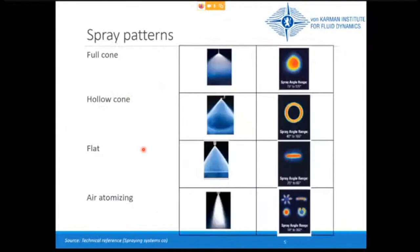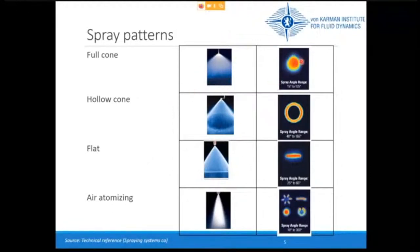Depending on the geometry of the nozzle, you can create different spray patterns. One mostly applied for water curtains is the full cone — from the side it looks like a cone, and from the bottom the water fills the whole cone. You can also have a hollow cone, where the water only fills the envelope. A flat pattern produces only a linear impact from the bottom. With air atomizing, more complex shapes are possible.